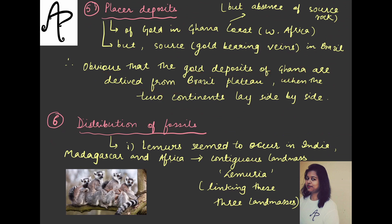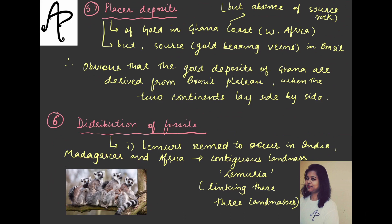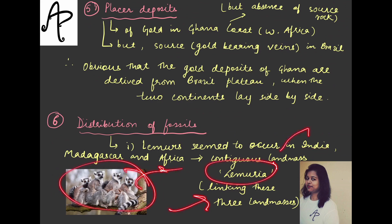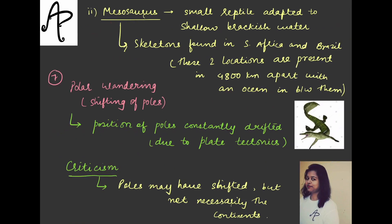The next evidence is the distribution of fossils — basically remains of plants and animals. Two fossils have been found. One is about the lemurs, which seem to occur in India, Madagascar, and Africa — all in the southern hemisphere. It was even assumed that all of these regions were at one point a contiguous landmass, which could be called Lemuria, because the fossils of these organisms were found combined across these regions.